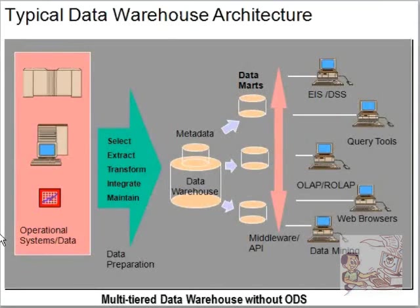The typical data warehouse architecture — this is how it looks like without an ODS layer. You directly have your sources, you bring the data into the data warehouse, build marts, and give out reporting.